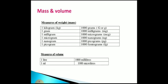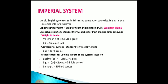In mass and volume, the measurement of weight in the form of mass: 1 kilogram is equal to 1000 grams, designated as g. Similarly, 1 gram equals 1000 milligrams; 1 milligram is equal to 1000 micrograms; and 1 microgram is equal to 1000 nanograms. In the case of volume, 1 litre is equal to 1000 millilitres, and 1 ml is equal to 1000 microlitres.